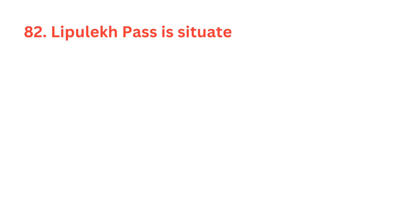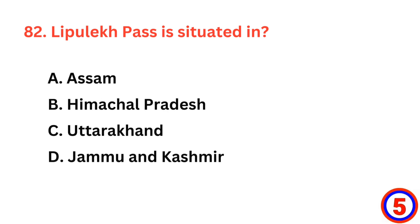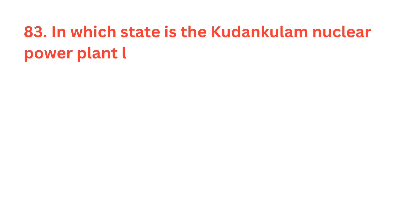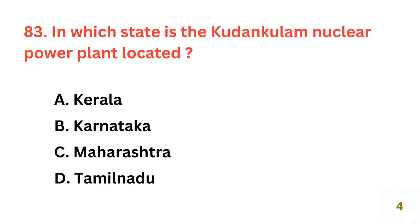Lipulekh Pass is situated in? The correct answer is option C, Uttarakhand. In which state is the Kudankulam nuclear power plant located? The correct answer is option D, Tamil Nadu.